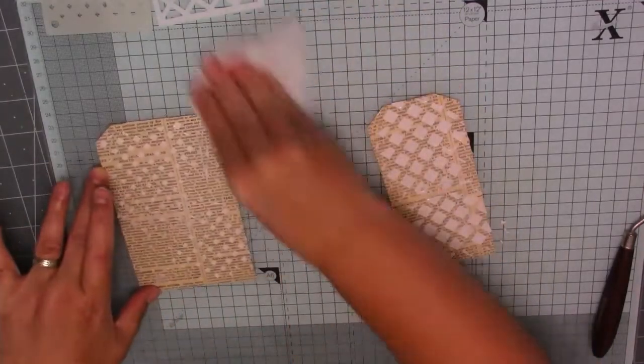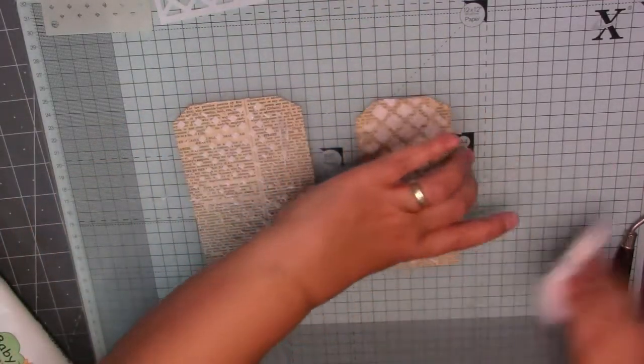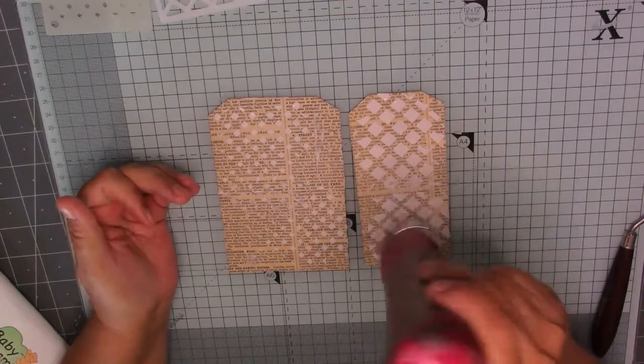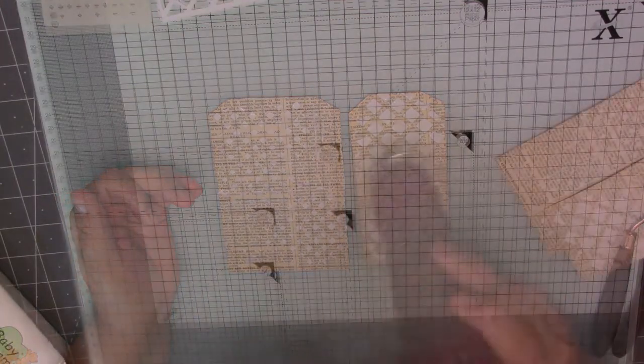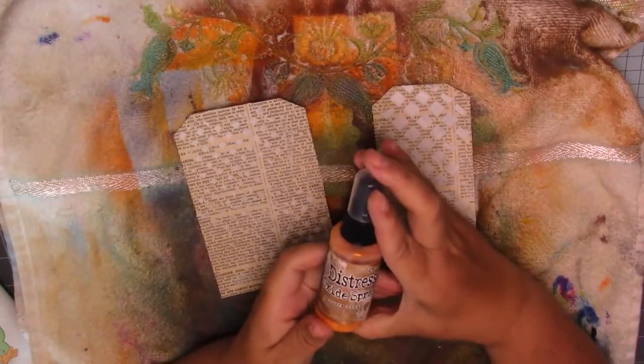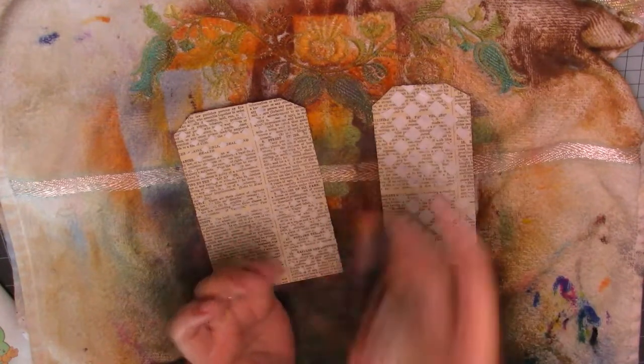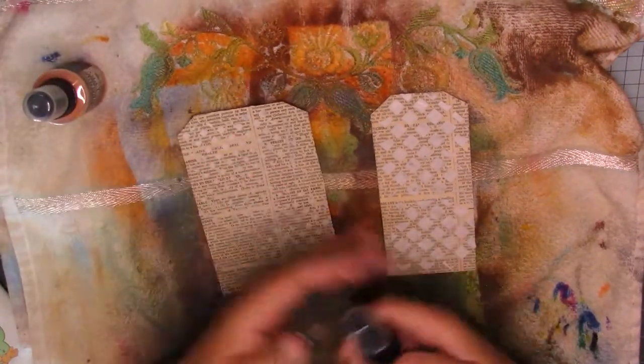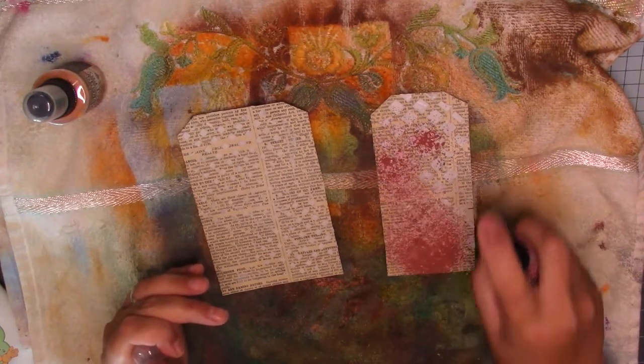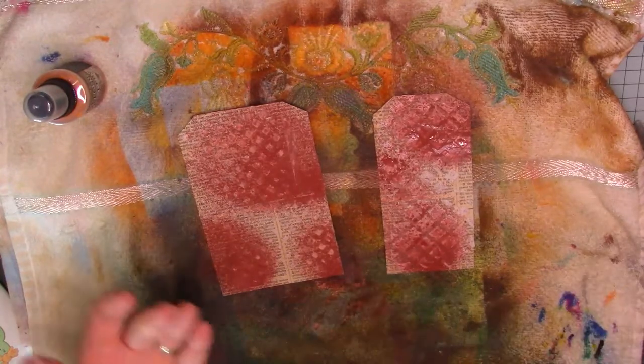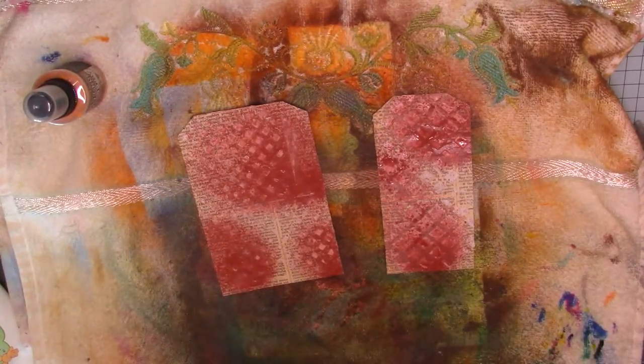I think I'm going to clean that before I put the lid on it properly. I'm just going to put it out the way there. Right, what I'm going to do now, guys, is I'm just going to bring in my heat gun and just dry off that texture paste. I'm just going to put that down on the desk a minute. I've chosen two colours. Two colours I very rarely work with. I've got Rusty Hinge. These are Distress Oxide sprays. And I've got Aged Mahogany.